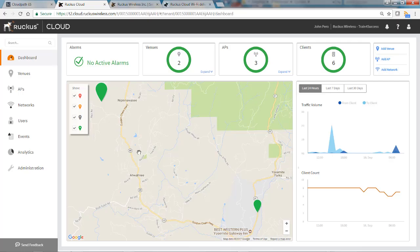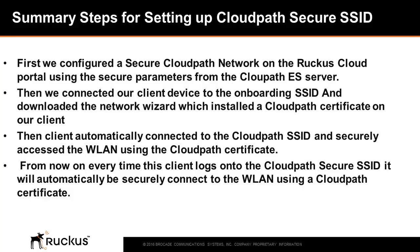This is how we use the Ruckus Cloud portal to create a CloudPath secure wireless LAN. First, we configured a secure CloudPath network on the Ruckus Cloud portal using the secure parameters from the CloudPath ES server. Then we connected the client device to the onboarding SSID and downloaded the network wizard, which installed a CloudPath certificate. The client then automatically connected to the CloudPath SSID and securely accessed the wireless LAN. From now on, every time this client logs onto the CloudPath secure SSID, it will automatically be securely connected using the CloudPath certificate.